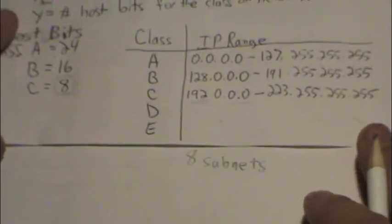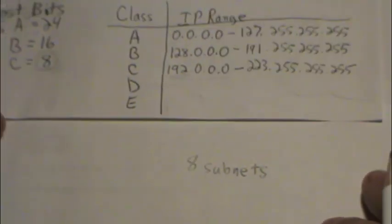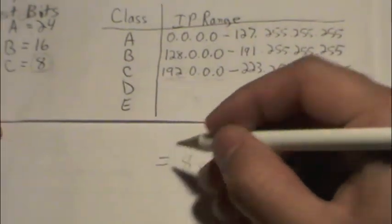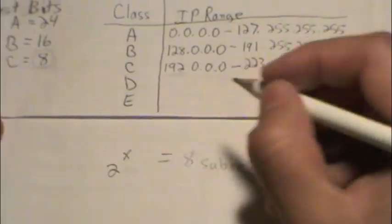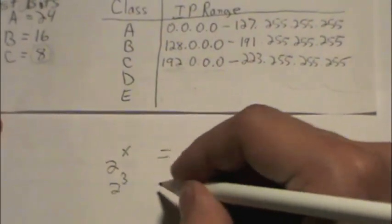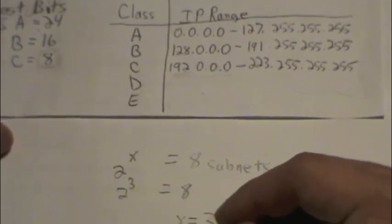So the first piece of information that we're going to want to grab - we know we need eight subnets, so that's 2 to the x equals 8. So that's going to be 2 to the third, because 2 times 2 is 4 times 2 is 8. x equals 3.